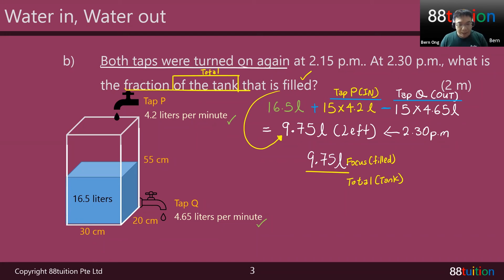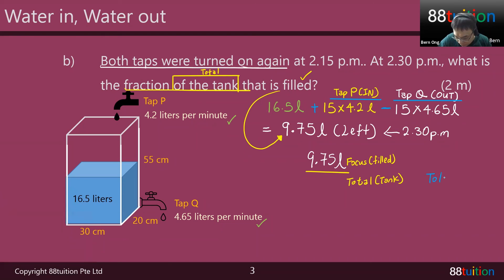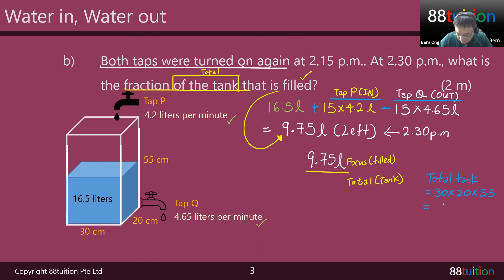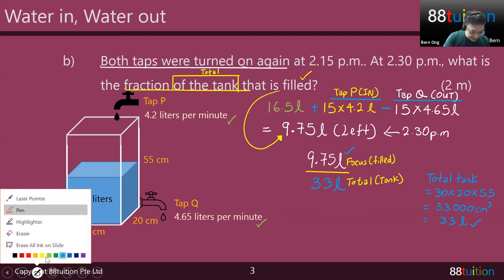What's the total? The total tank capacity equals length times breadth times height: 30 times 20 times 55. That gives you 33,000 cubic centimeters. Divide by 1,000 to give you 33 liters. You have to be fair when comparing fractions — liters must be compared with liters. So the fraction is 9.75 over 33.